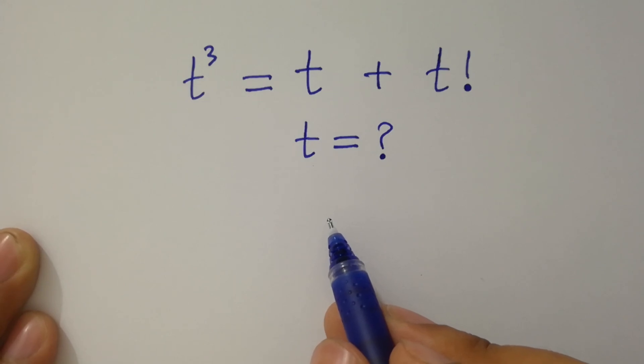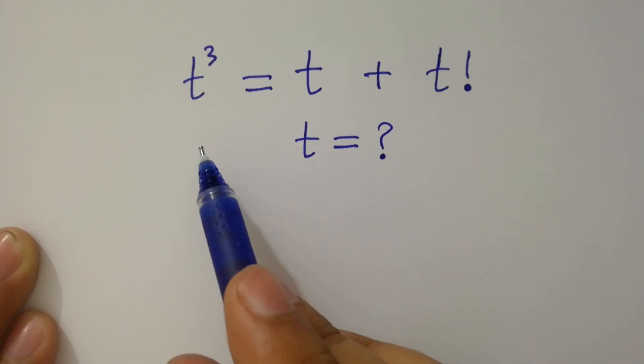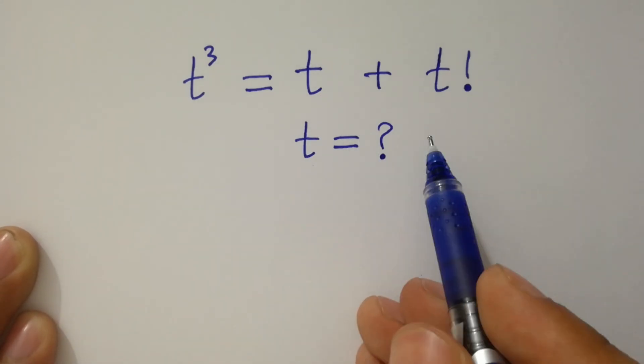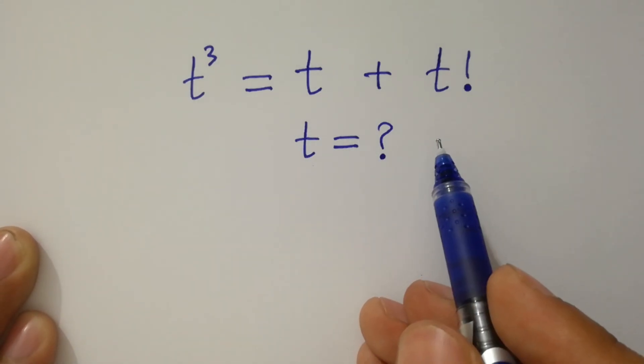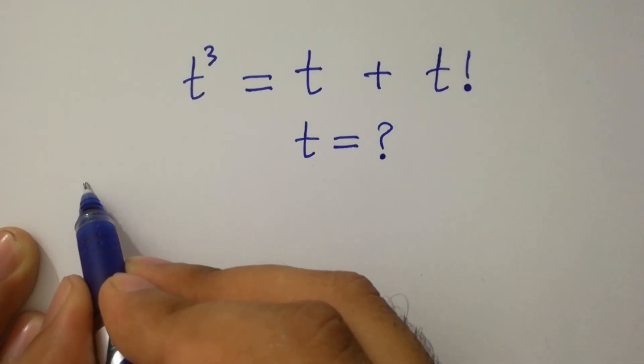Hello friends, find the value of t if t cubed equals t plus t factorial. Let's find a solution.